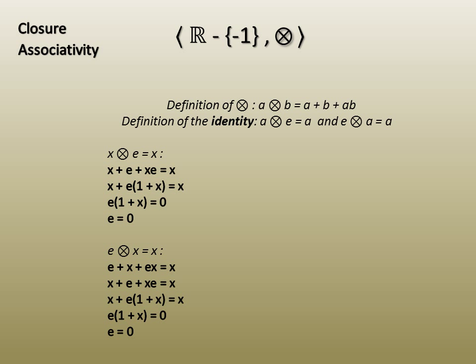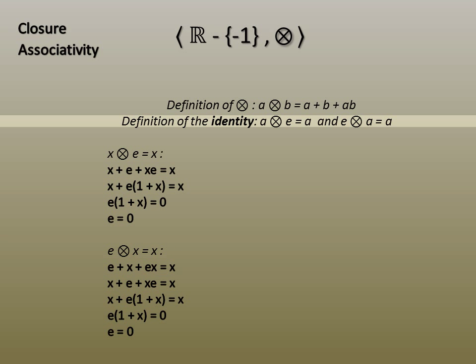Thirdly, we establish the existence of an identity element. The definition is displayed here. It needs to be proved that both of these equations have equal solutions for the general element. Starting with the left, we write the definition of X operated on E and equate it with X. Because we are trying to solve for E, we factorize, then subtract X from both sides. Finally, we divide both sides by 1 plus X. We couldn't do this if 1 plus X was equal to 0, but this is impossible as X can't be negative 1, so the right identity is 0.